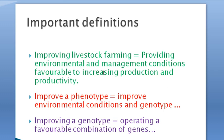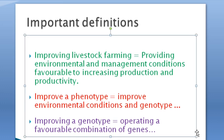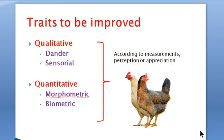Improving livestock farming means being able to provide environmental and management conditions favorable to increasing production and productivity. To improve a phenotype is all about improving environmental conditions and the genotype. More specifically, improving a genotype means operating a favorable condition of genes.